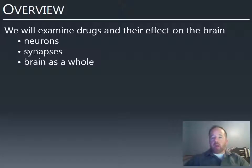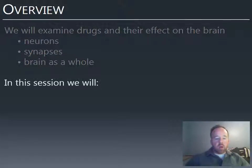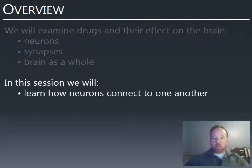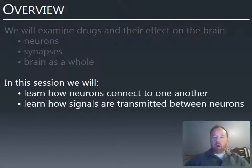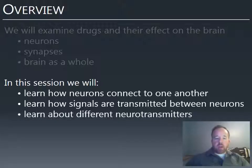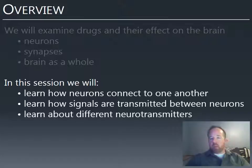In this session we're going to talk about how neurons connect to one another structurally, and how signals are transmitted from one neuron to another — that's a chemical process. We'll look at the structure first, then the chemistry, and then we'll learn about the individual chemicals used to transmit information from one neuron to another. Those are called neurotransmitters — you've probably heard of many of them.